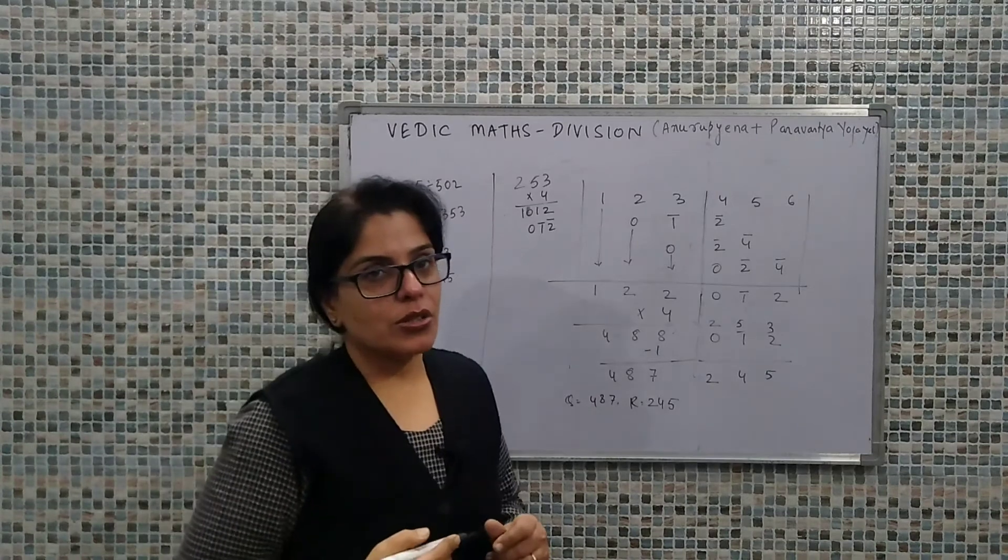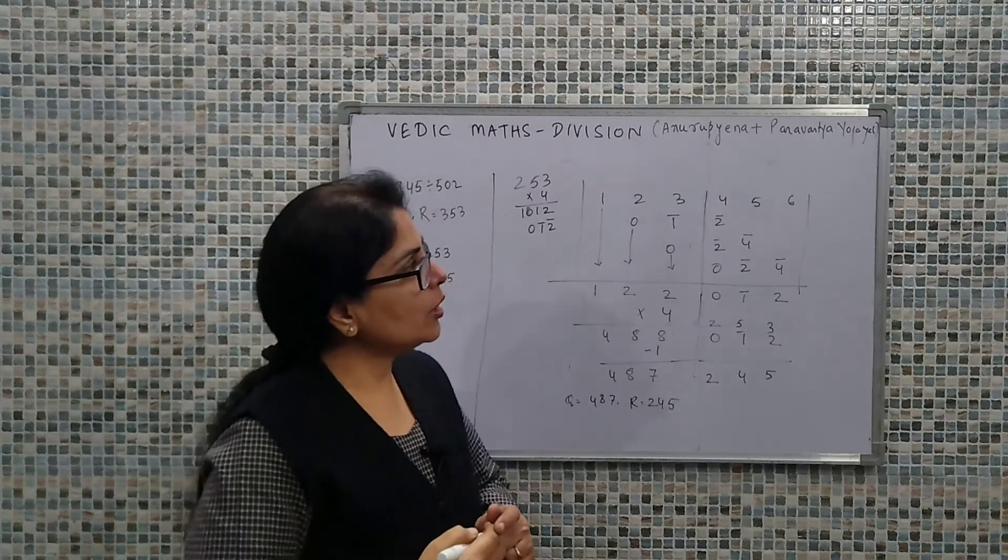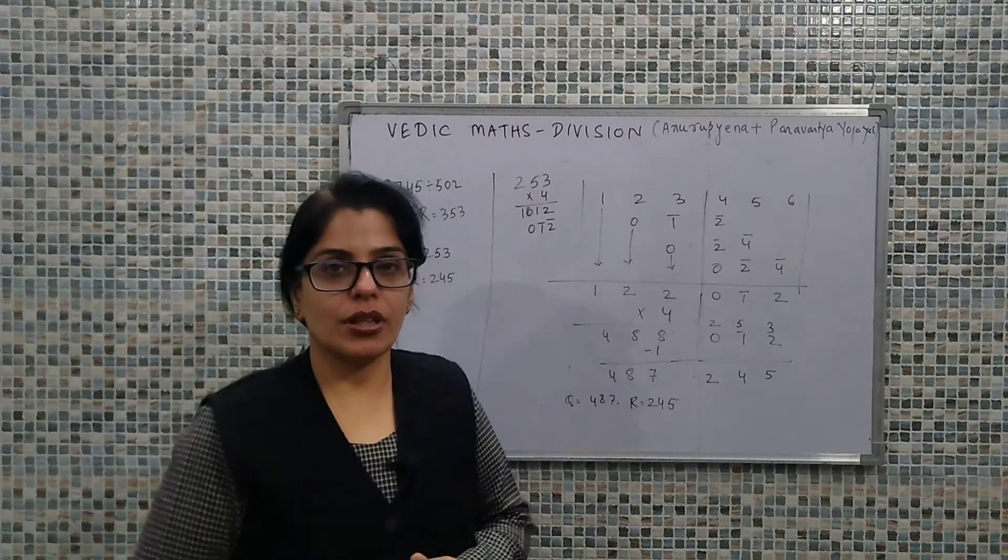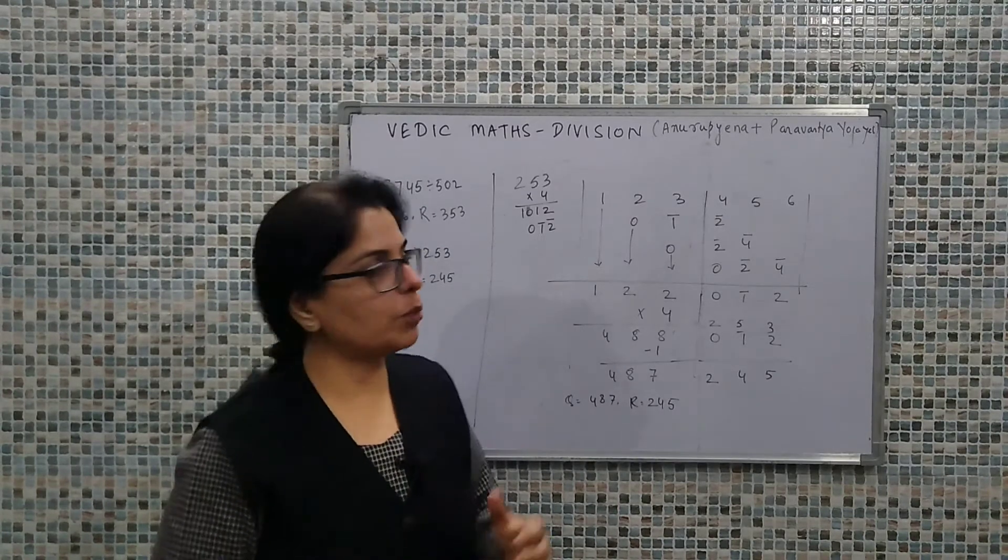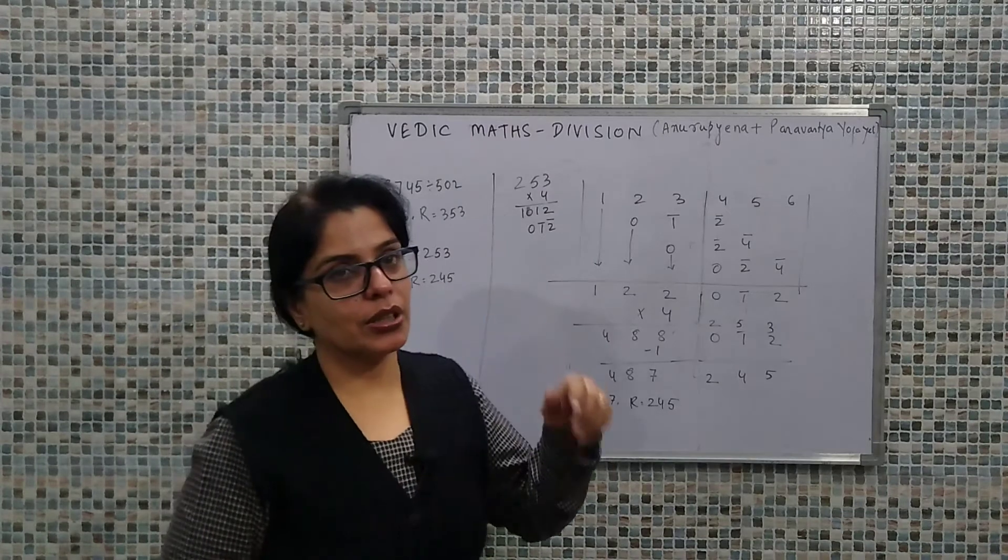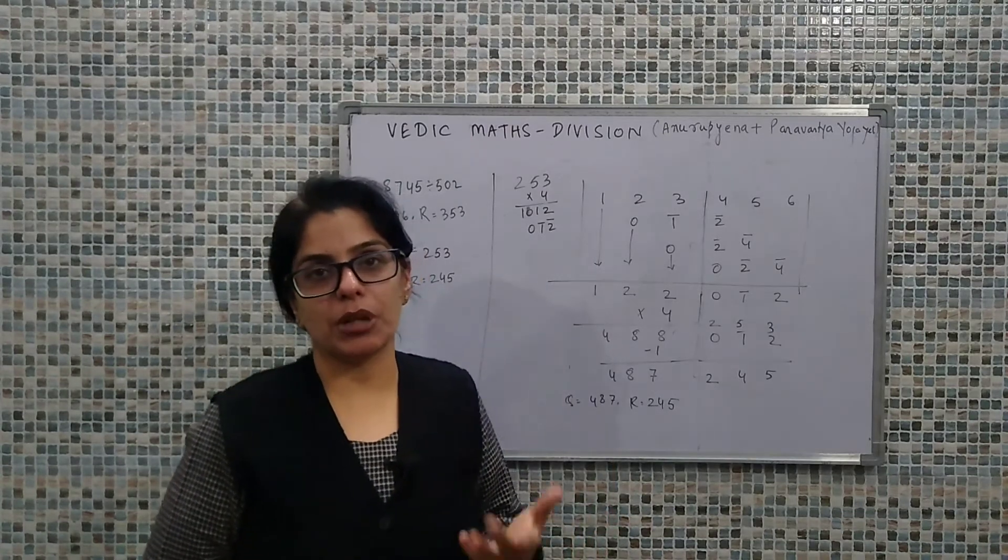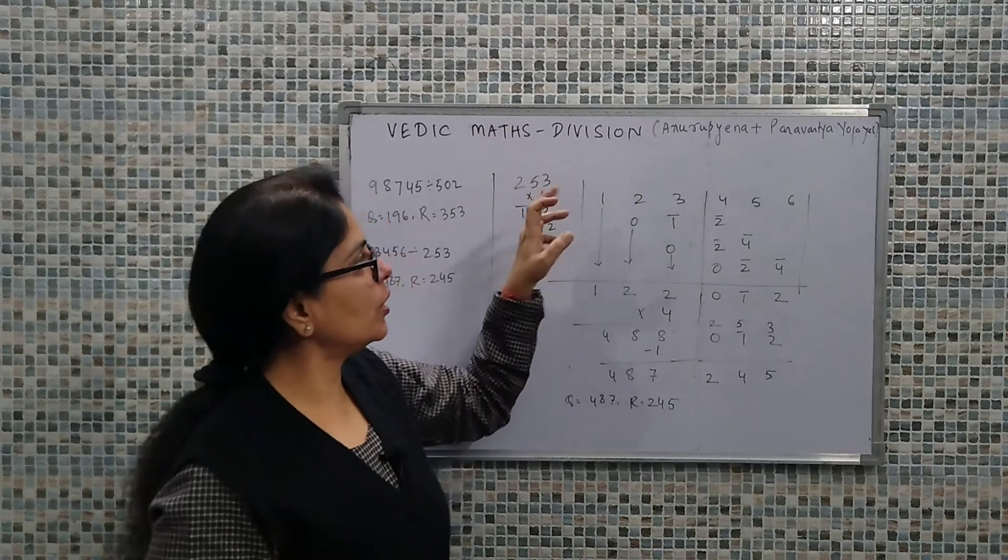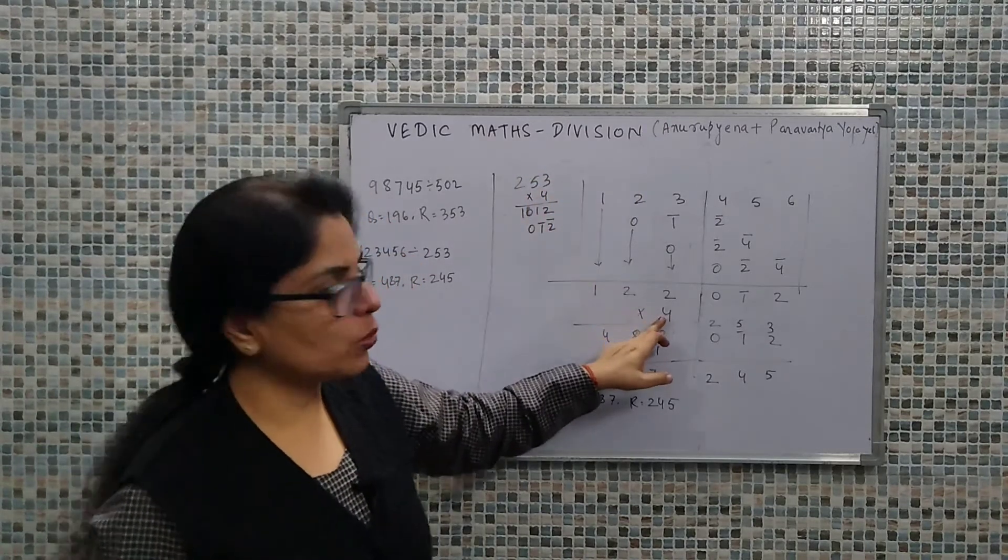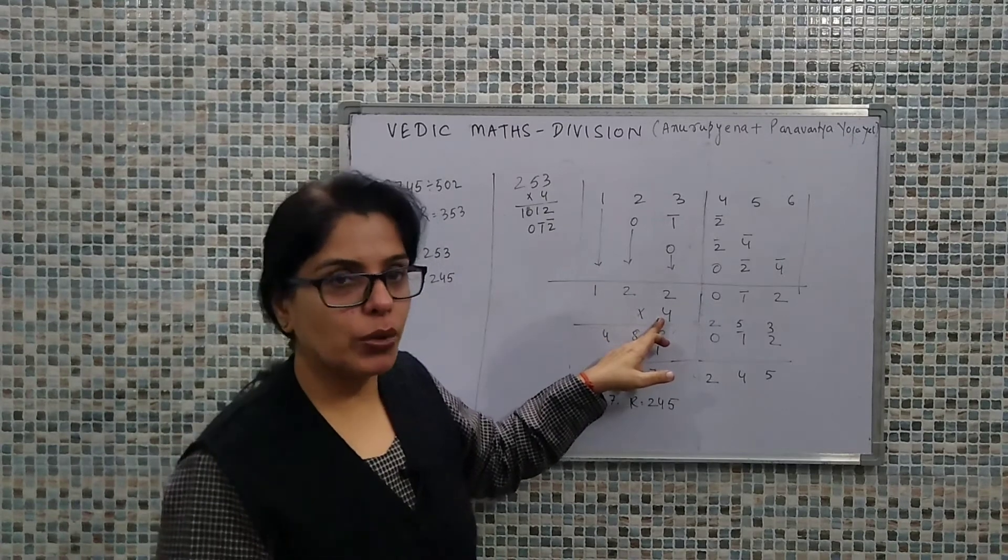So that is all about today's discussion. What we have learned: if we have divisors that are not near the base value or above the base value, we use a multiplying factor. The moment we are speaking about a multiplying factor, we are using the proportionality concept. Whatever the multiplying factor is, it will multiply in the quotient value.